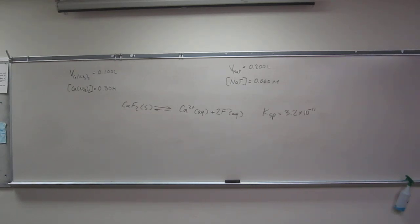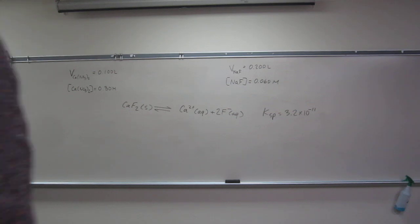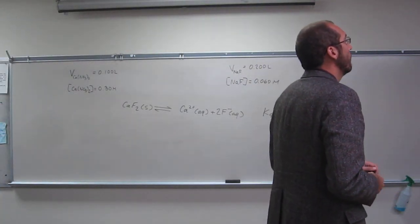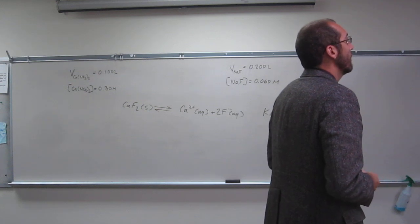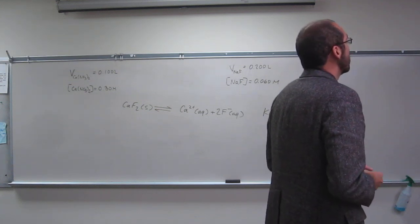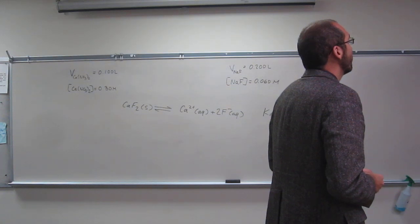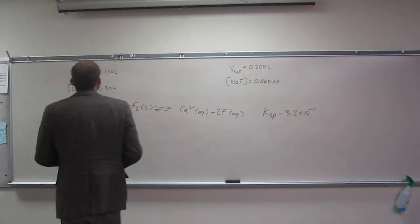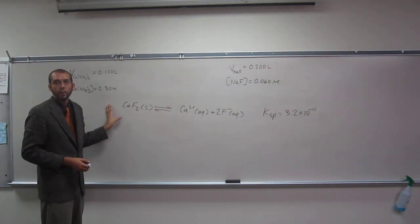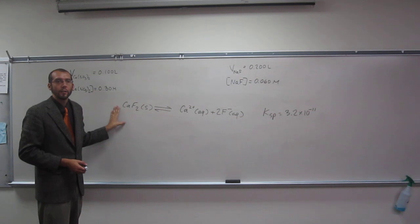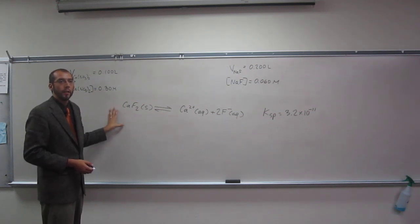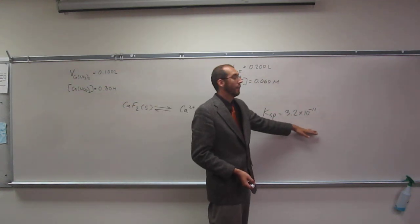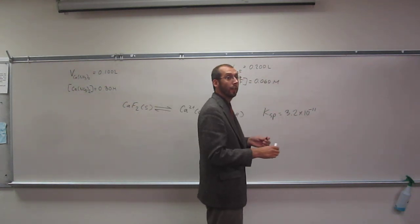When we mix the following two solutions, does a precipitate form? 0.100 liters of 0.3 molar calcium nitrate is mixed with 0.200 liters of 0.060 molar sodium fluoride. We have all that written up here, and I've given you that we're forming calcium fluoride as our insoluble or slightly soluble compound. The Ksp of calcium fluoride is given as 3.2 times 10 to the negative 11.